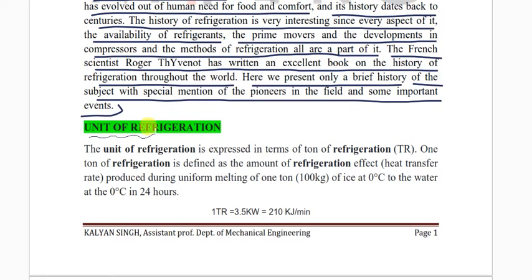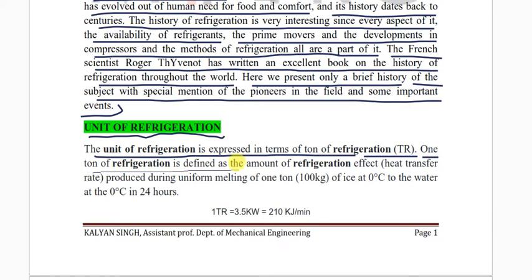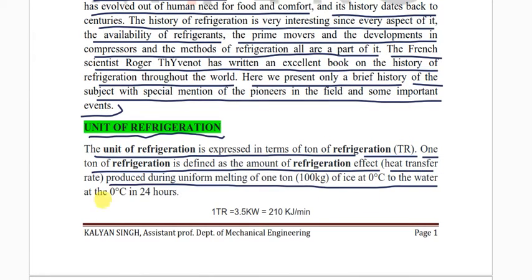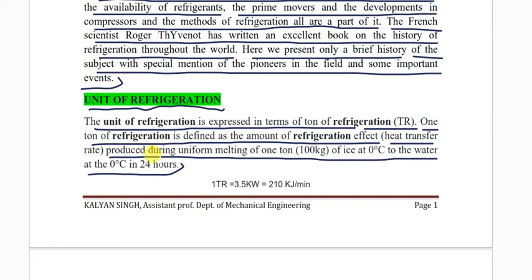The unit of refrigeration is expressed in terms of tonne of refrigeration, TR. One tonne of refrigeration is defined as the amount of refrigeration effect — the heat transfer produced during uniform melting of one tonne (1000 kg) of ice at 0°C to water at 0°C in 24 hours.